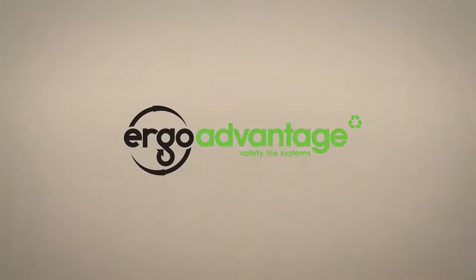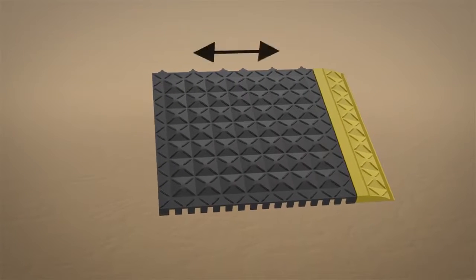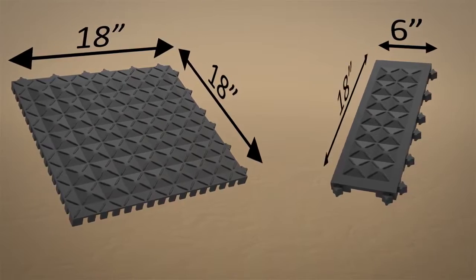The Ergo Advantage modular system is comprised of tiles and safety edging. Tiles are 18 inches by 18 inches and 6 inches by 18 inches.